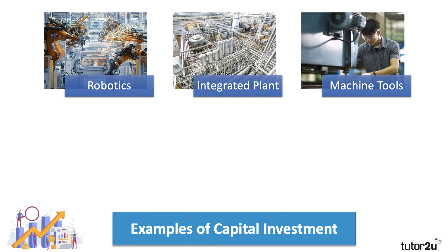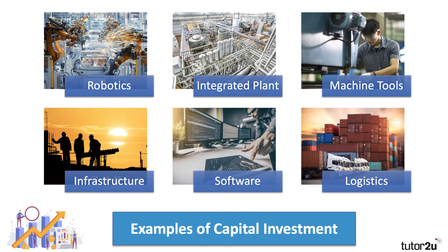For example: robotics, integrated plants to encourage mass production, machine tools, software, hardware, logistics equipment — from container ships to trucks to aircraft — and also crucially things like infrastructure to provide us with power, transport, energy, and the other utilities that we need.